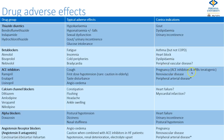If a patient's creatinine doubles when they start an ACE inhibitor, that is good grounds to withdraw the drug. Calcium channel blockers commonly cause constipation, flushing, headache, and ankle swelling; they are relatively contraindicated in heart failure and myocardial infarction. Alpha blockers may cause postural hypotension with dizziness. ARBs have a similar profile to ACE inhibitors except they don't cause cough, but they can also cause angioedema.